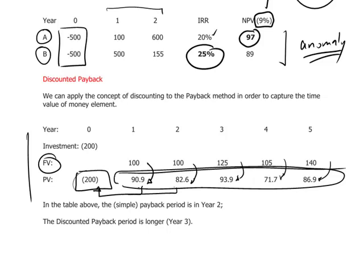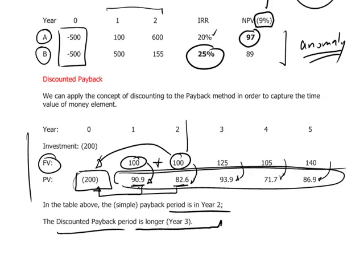The simple payback calculation provides a payback period of two years — 100 plus 100 equals 200, fully recovering the investment after two years. For the discounted payback, since the discounted amounts are smaller than the nominal cash flows, the payback period is stretched out longer. In this case, it goes into year three before we fully recover the 200 initial investment amount.